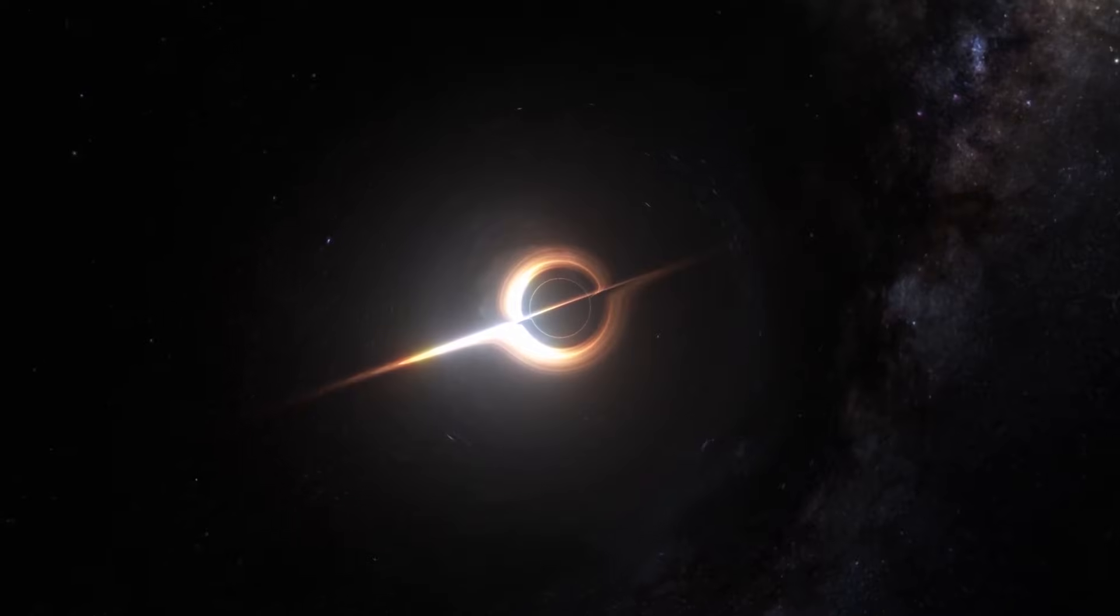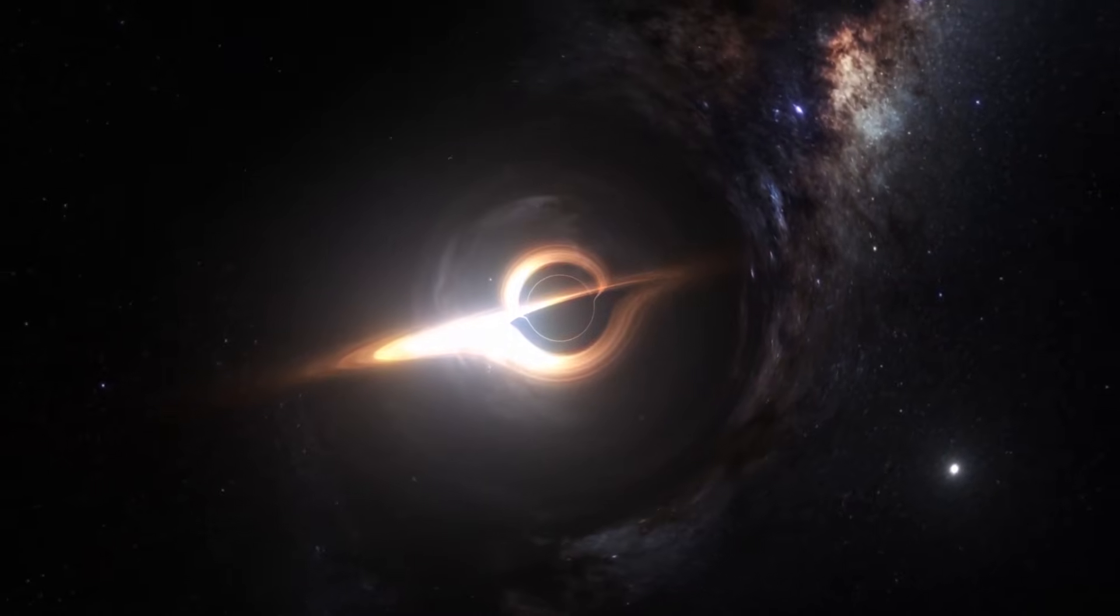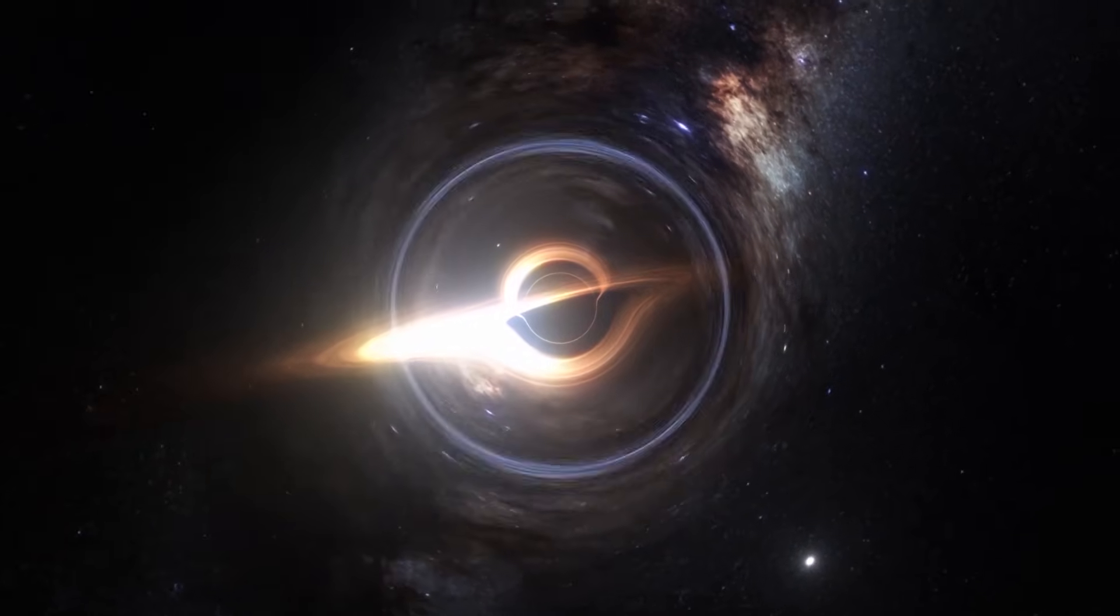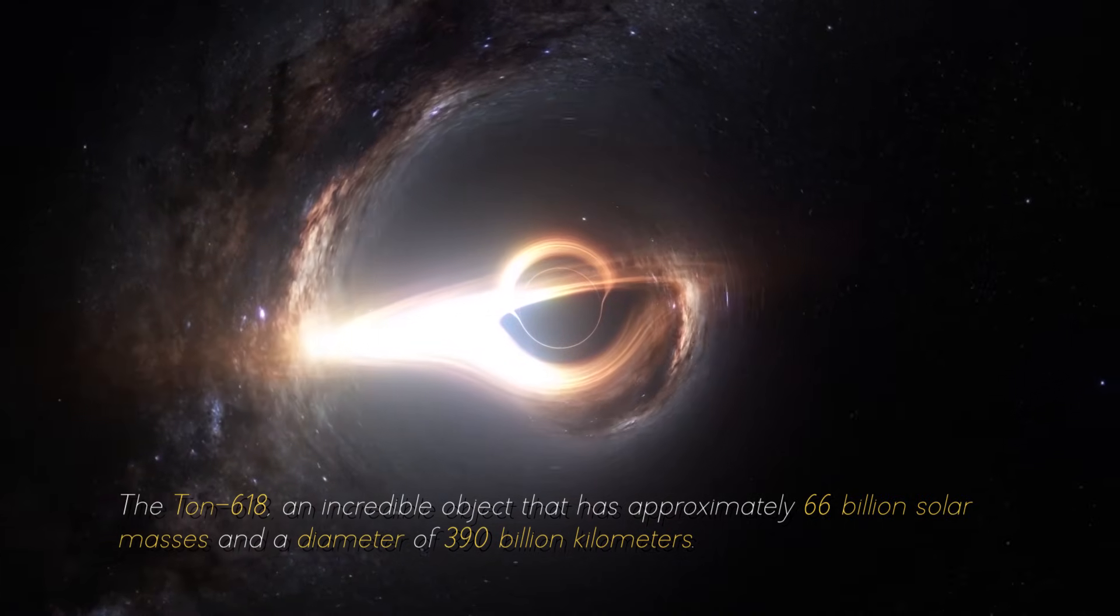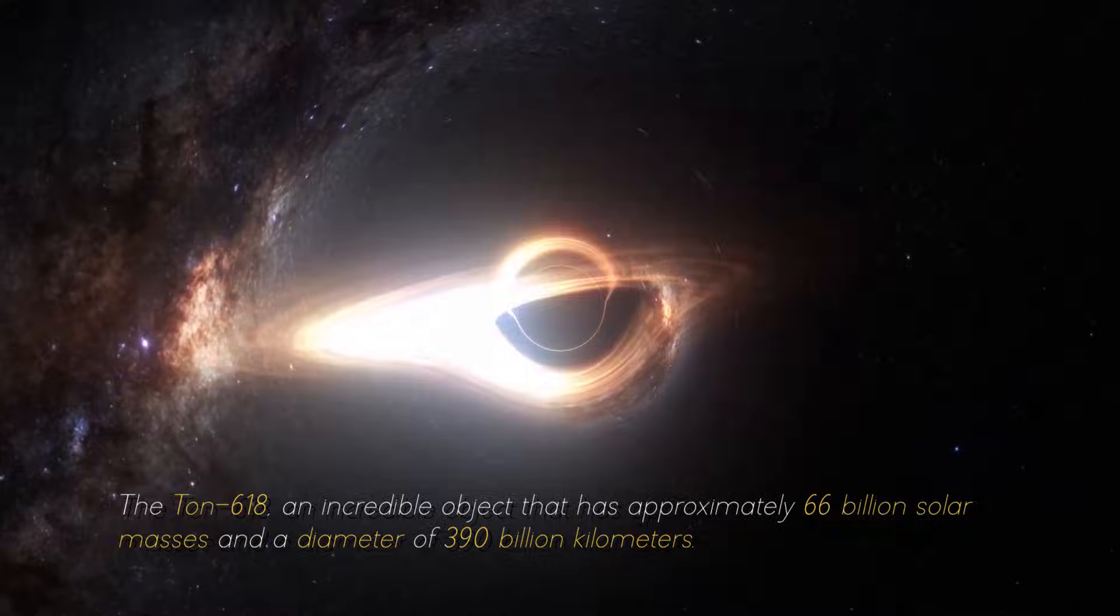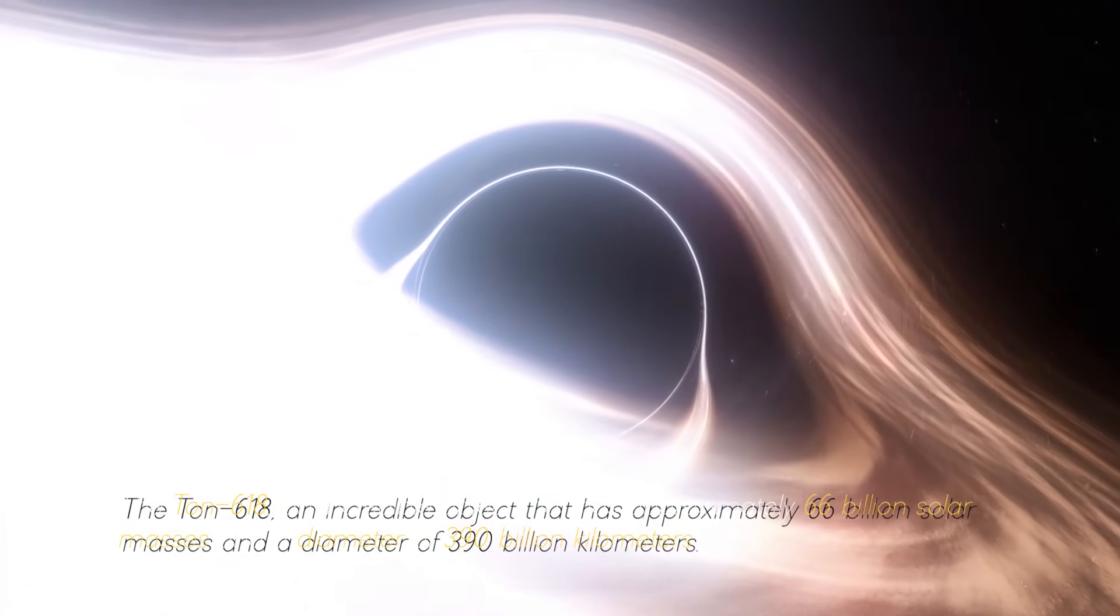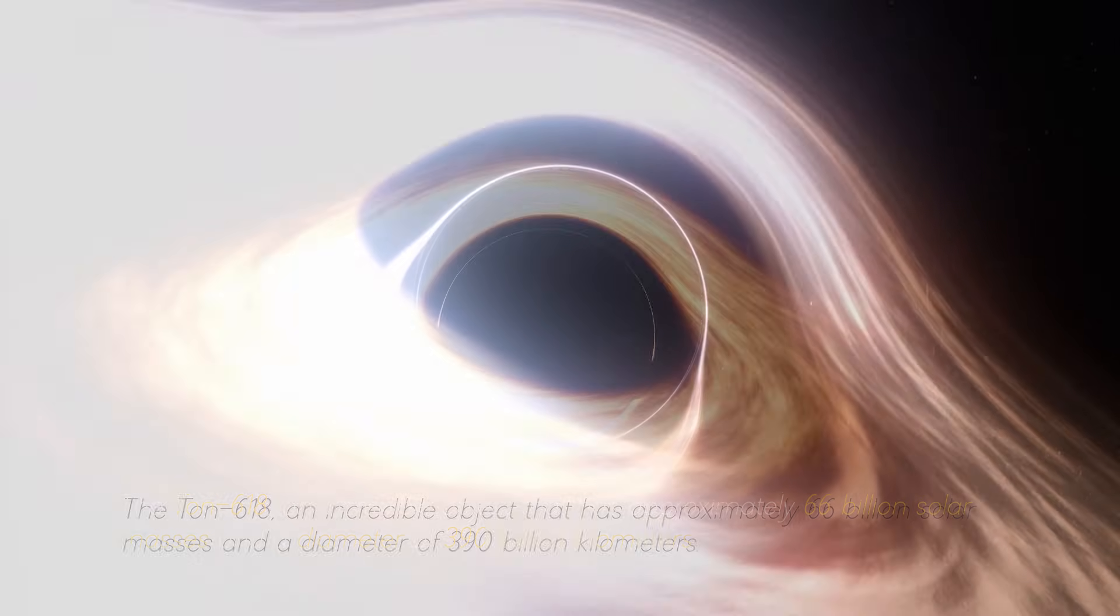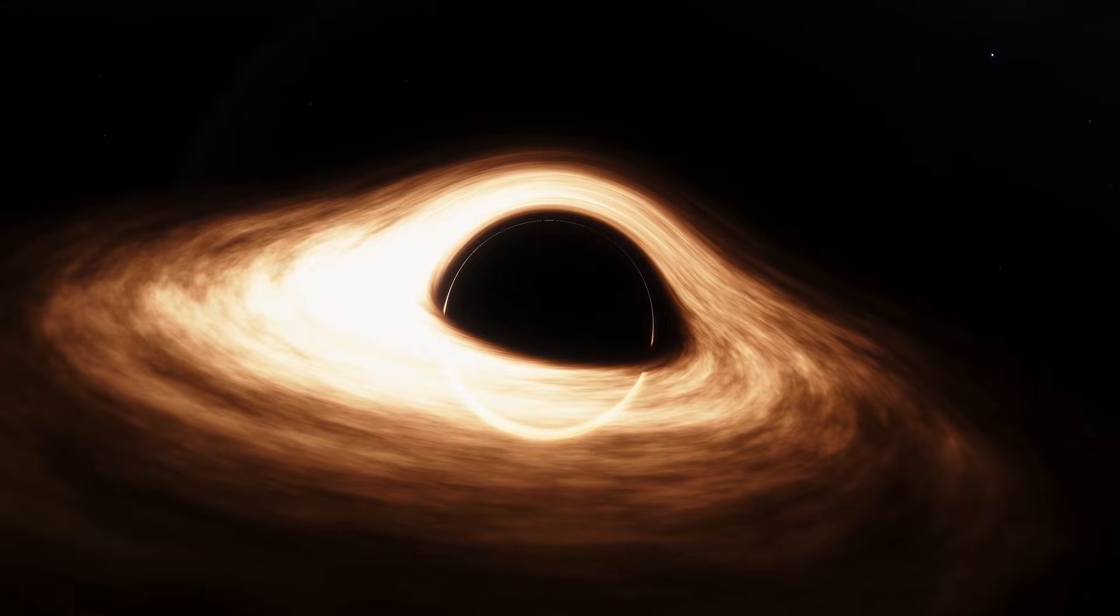Not everything ends here. This star cannot be compared with the most massive black hole in our cosmos, the Ton 618, an incredible object that has approximately 600 billion solar masses and a diameter of 390 billion kilometers. For now, we will stop measuring in kilometers and start measuring in light years.